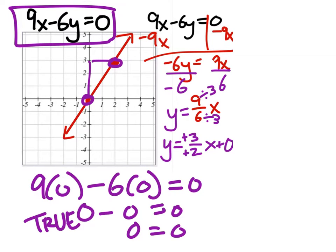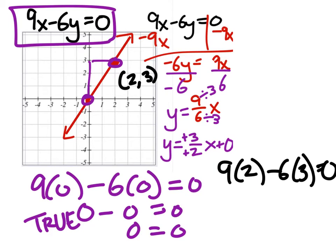So there's one point. But we should check the other point to make sure it is true as well. So 9 times x, this point is 2, 3. So 9 times 2 minus 6 times 3, that should equal 0. 18 minus 18, that does equal 0. That's true. So it confirms that those two points are on the line.